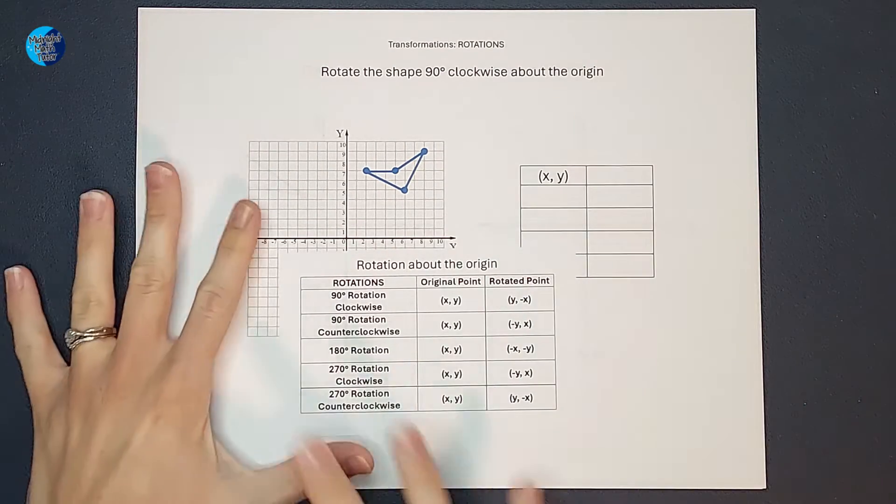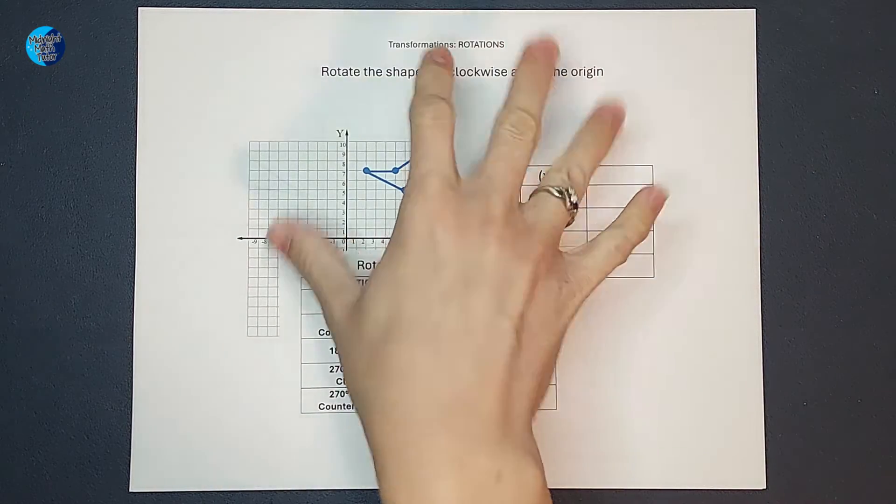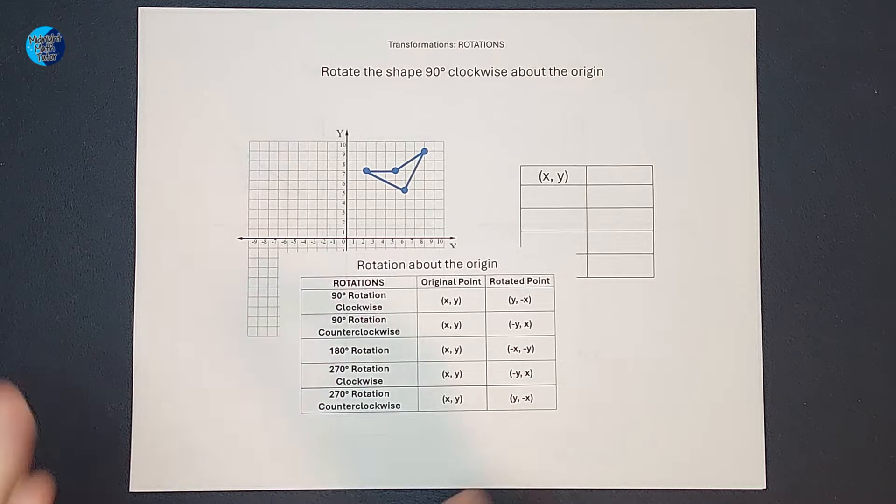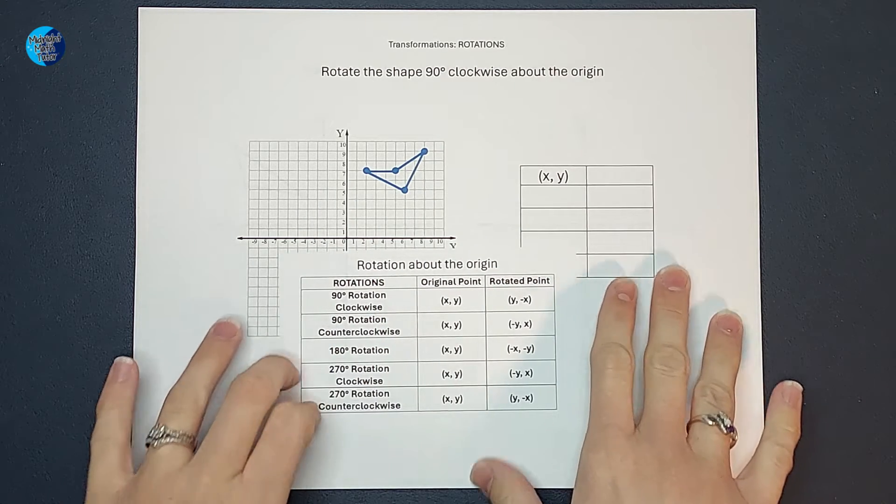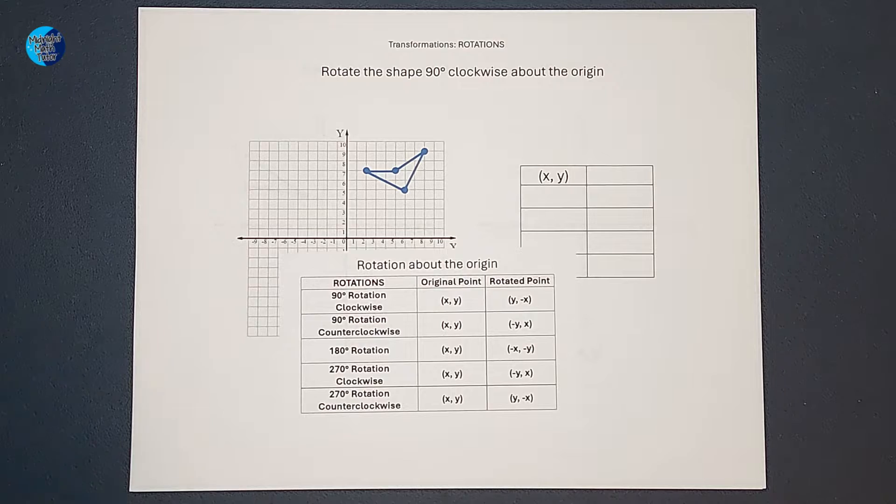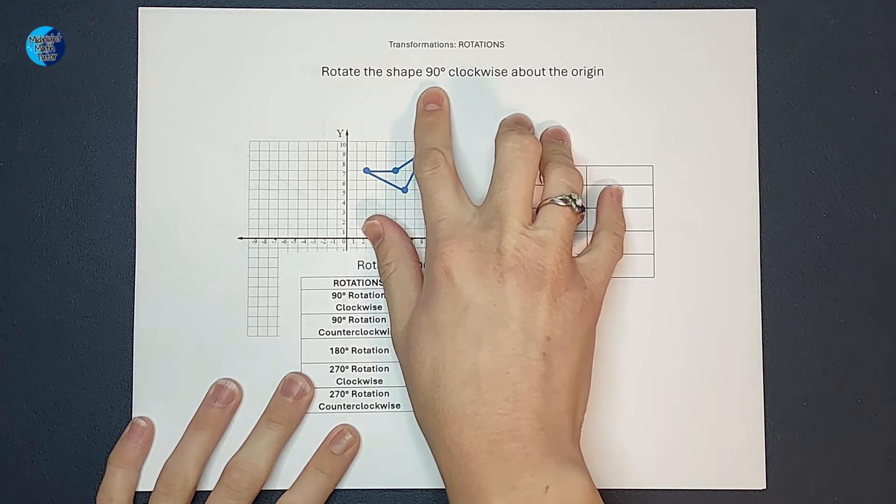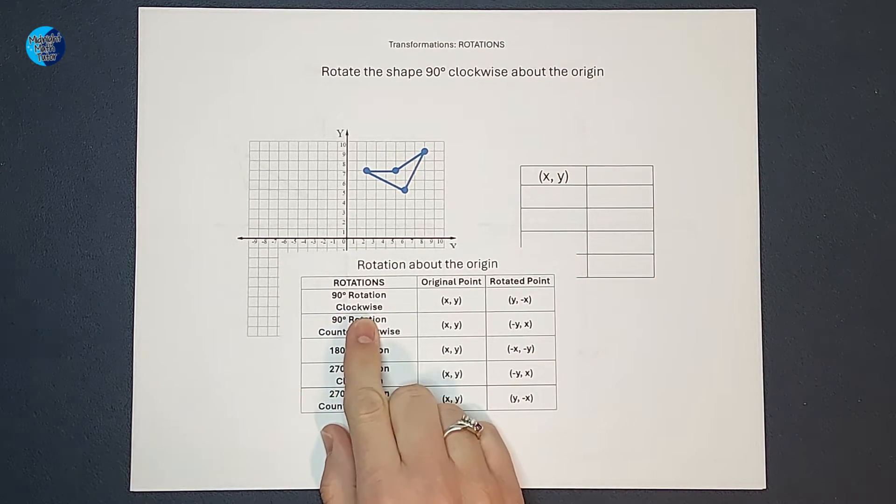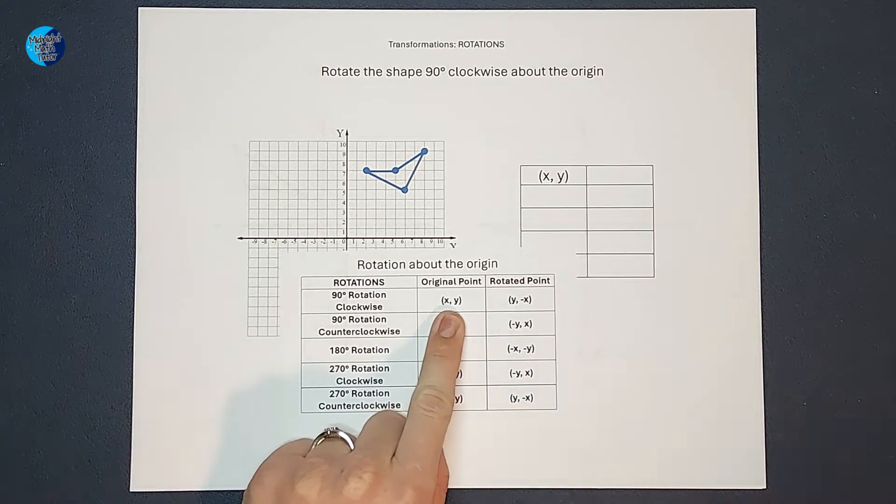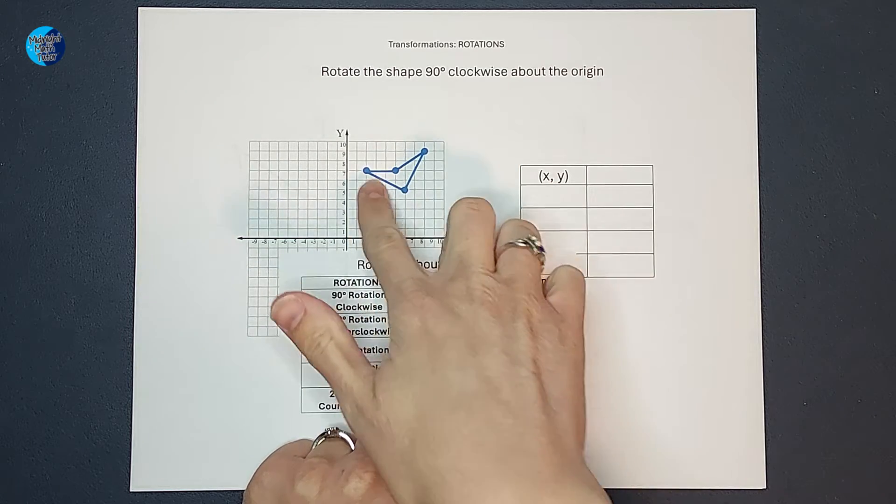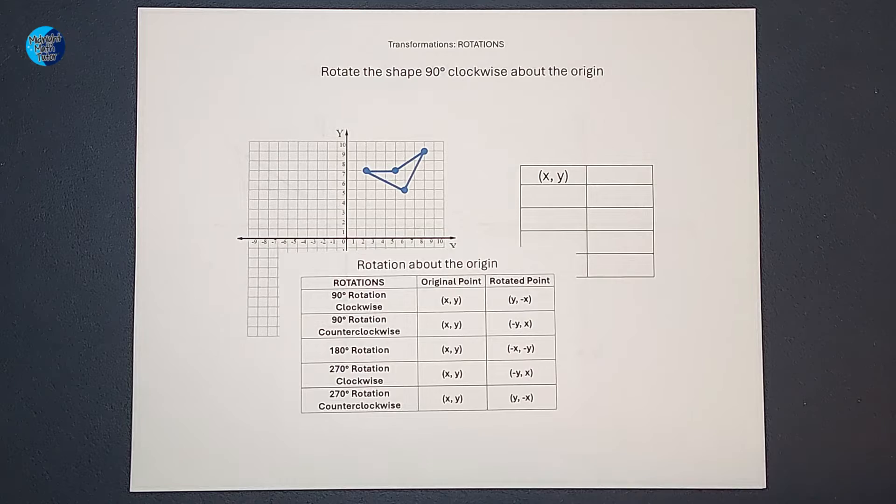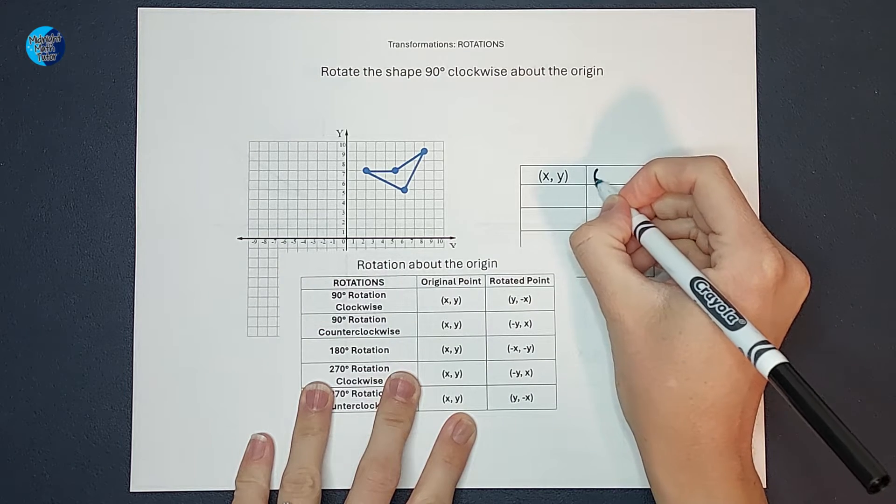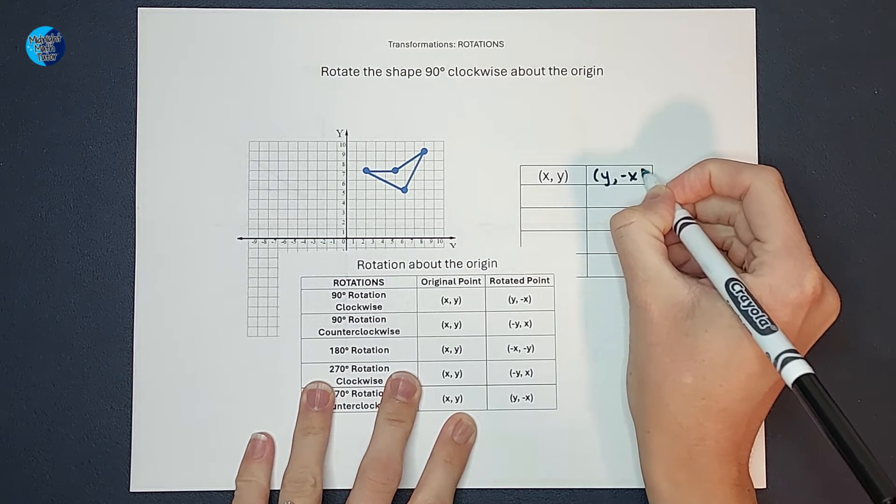So when we are doing a rotation, you will be told oftentimes how many degrees it is rotating and whether it is rotating clockwise or counterclockwise. This shape is rotating 90 degrees clockwise about the origin. So when we rotate 90 degrees clockwise, we are going to take whatever our original point is on our original shape and we are just going to switch the X and Y and change X's sign. So I'm just going to write that right here to help me remember that.